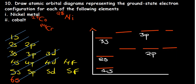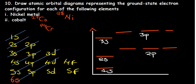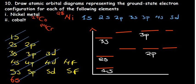We'll end somewhere around 4s and then 3d. So the configuration is 1s² 2s² 2p⁶ 3s² 3p⁶ 4s² 3d. Counting electrons: 2+2+6+2+6+2 = 20. To reach 24 we need 4 more electrons in 3d.